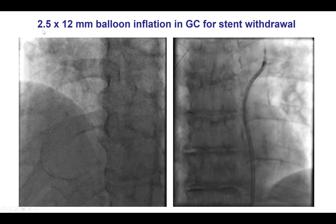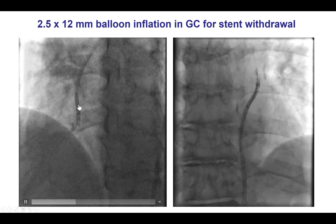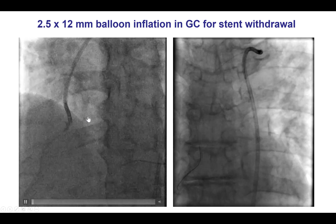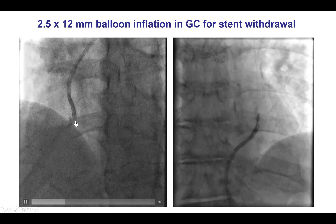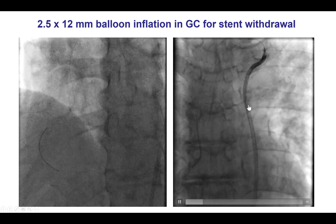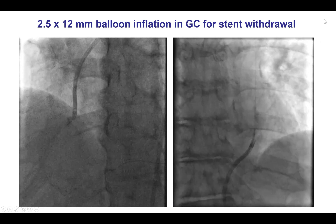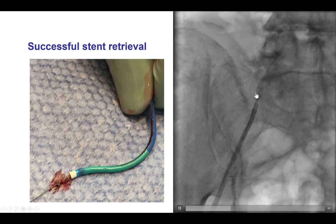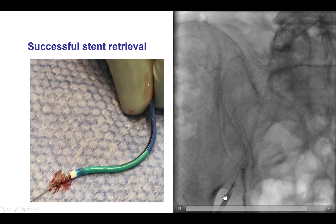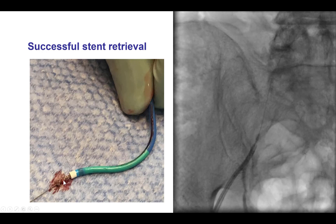After doing that, we advanced a small balloon inside the guiding catheter all the way to the tip and inflated it up to 20 atmospheres. After doing that, we were then able, under fluoroscopy, to remove the guiding catheter with the stent remaining on the guiding catheter as seen here. The stent, together with the guiding catheter and the inflated balloon, could then be retrieved all the way into the common femoral artery and outside the body.